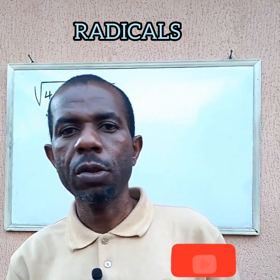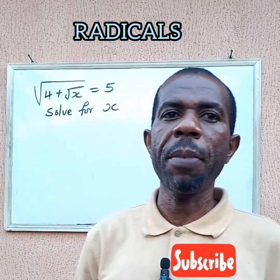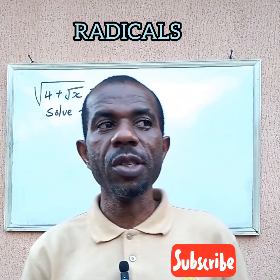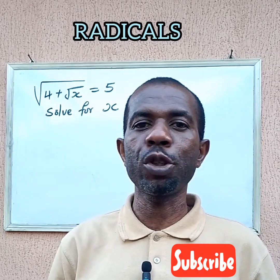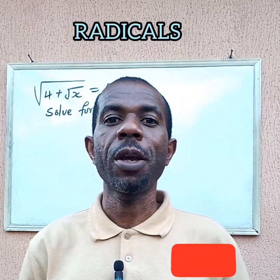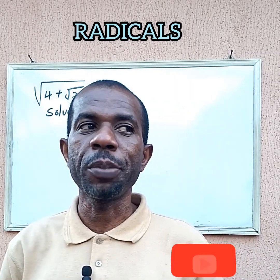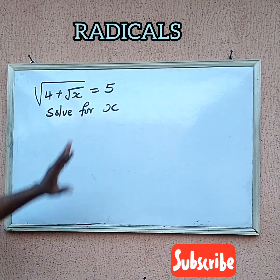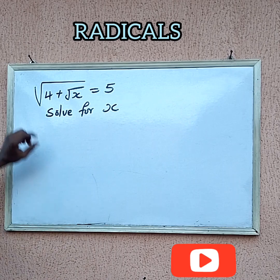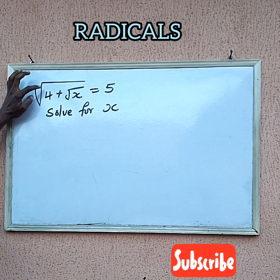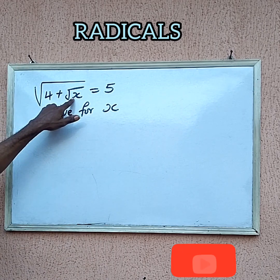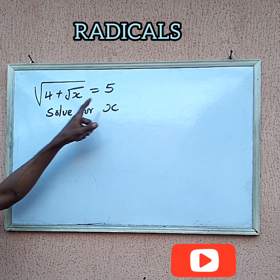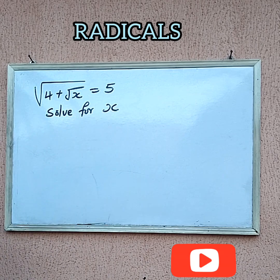Welcome once again to today's mathematics class. In today's class, we are going to provide a solution to this question on the board. We have this question — it is a radical equation. We are having the square root of 4 plus the square root of x, equal to 5. So we are asked to solve for x.